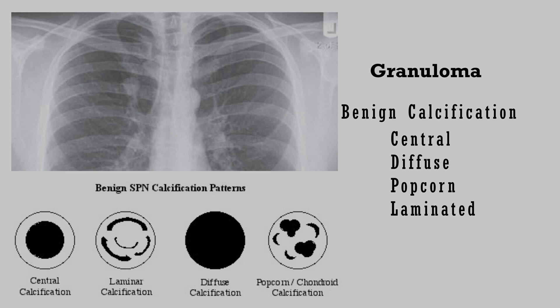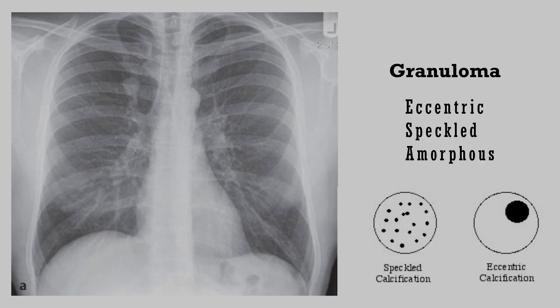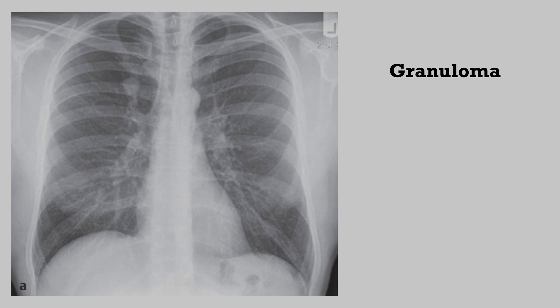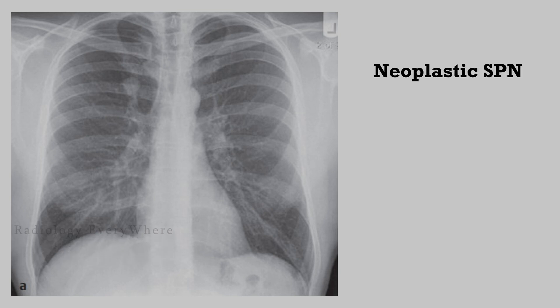calcification, no further workup is necessary. But if you see eccentric, speckled, or amorphous type calcifications, these are suspicious for a neoplastic process unless proven otherwise. In granuloma, you can also see calcified hilar and mediastinal lymph nodes.